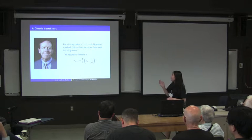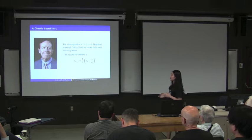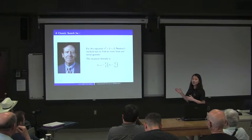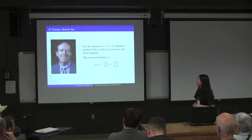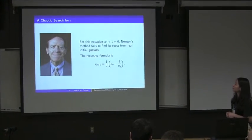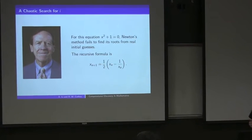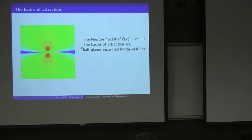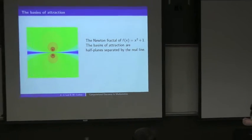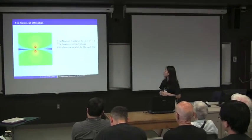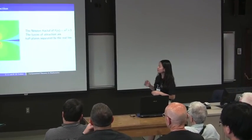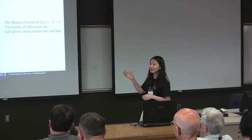The paper starts with a very special example where the Newton's method fails to find roots for real initial cases. The equation is very simple — we all know the roots are positive and negative i — but following the recursive formula, the sequence will never converge to the roots we want. We can put this problem in the complex plane: the two roots are i and negative i.